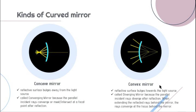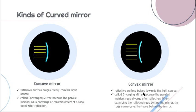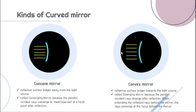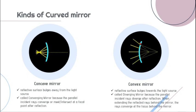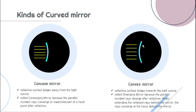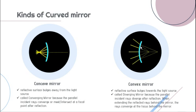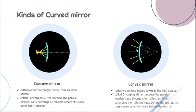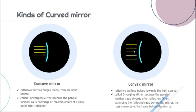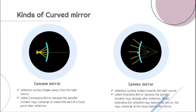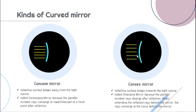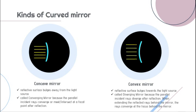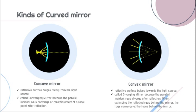On the convex mirror, the reflective surface bulges towards the light source. As light strikes the mirror, the reflected rays seem to move away from each other — so this is called a diverging mirror. The parallel incident rays diverge after reflection. When extending the reflected rays behind the mirror, the rays converge at the focus behind the mirror.